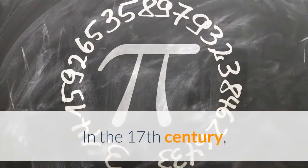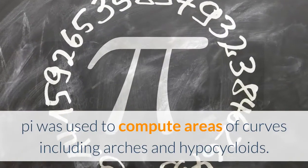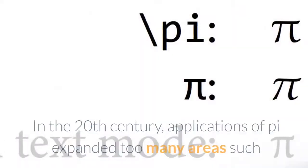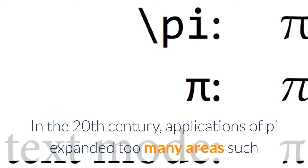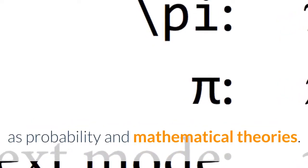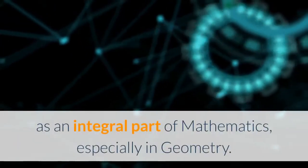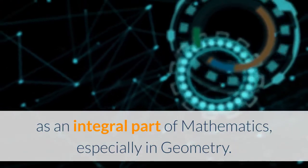In the 17th century, Pi was used to compute areas of curves including arches and hypercycloids. In the 20th century, applications of Pi expanded to many areas such as probability and mathematical theories. For over 250 years, the symbol for Pi has been used as an integral part of mathematics, especially in geometry.